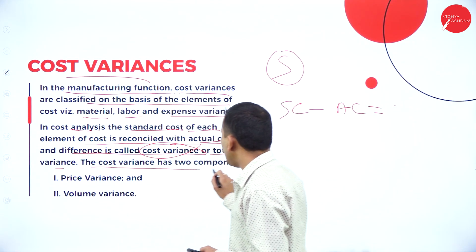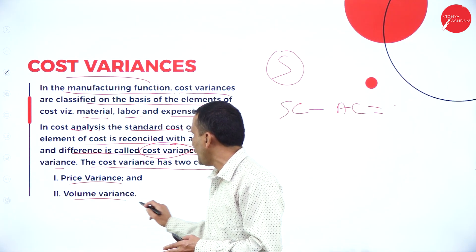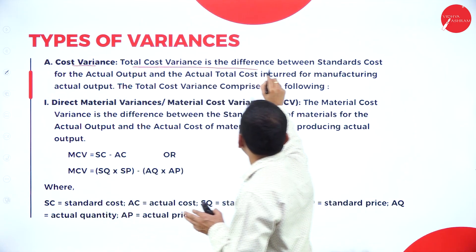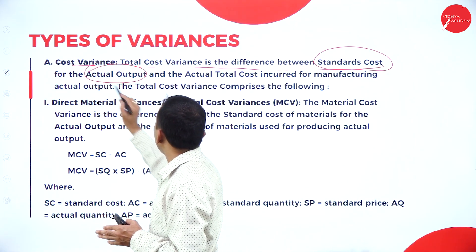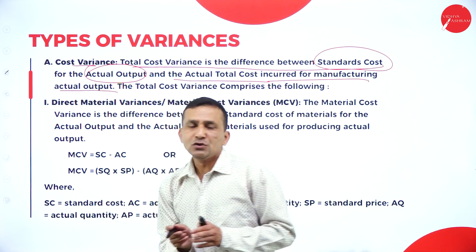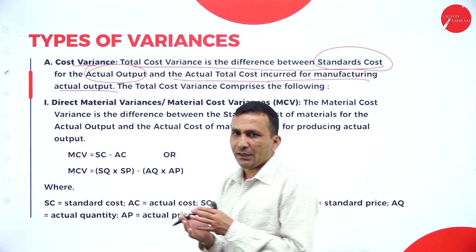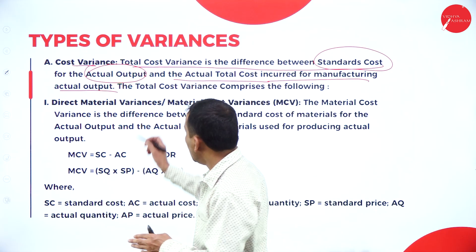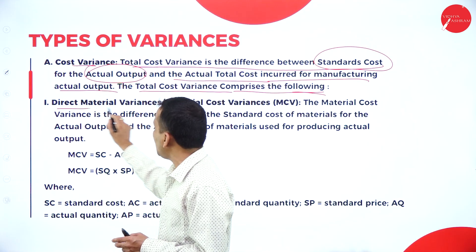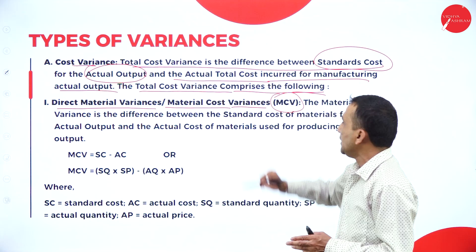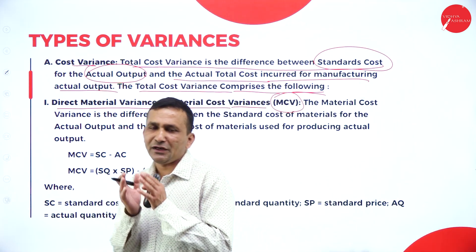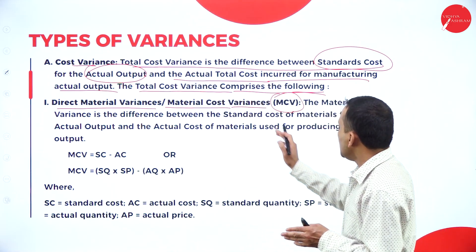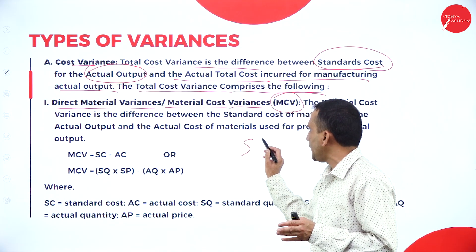The total cost variance is further classified into price variance and volume variance. The total variance is the difference between the standard cost and actual output — the actual total cost incurred for manufacturing the actual output, involving input resources like material, labor, and overheads. The first component is the Direct Material Variance, or Material Cost Variance (MCV) — the standard cost compared with the actual cost of material.